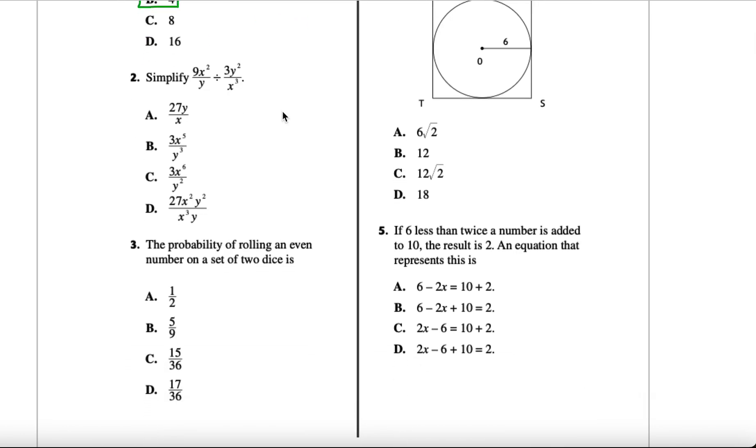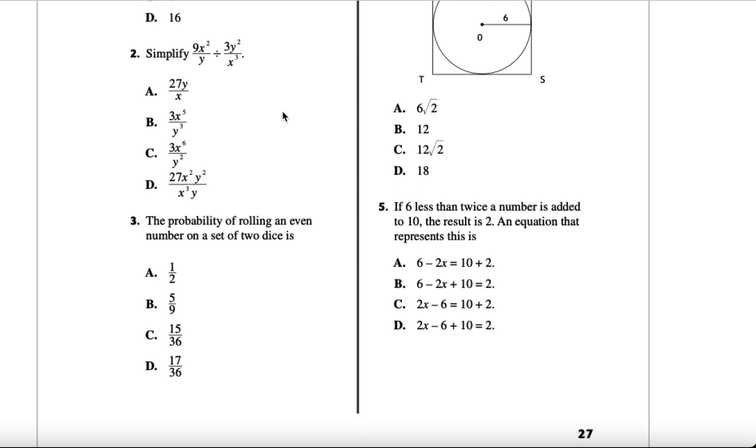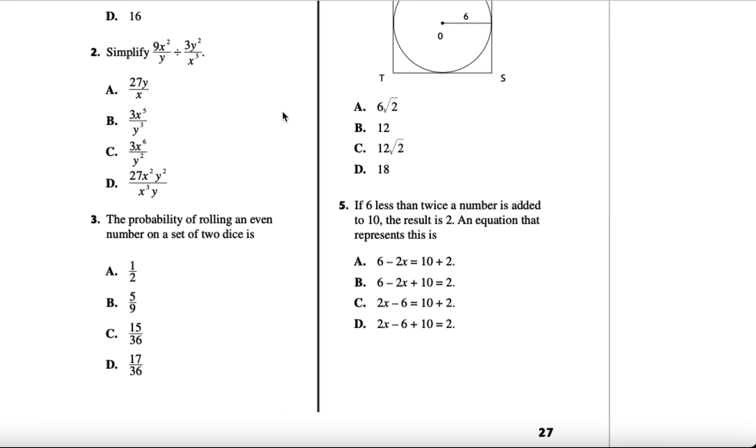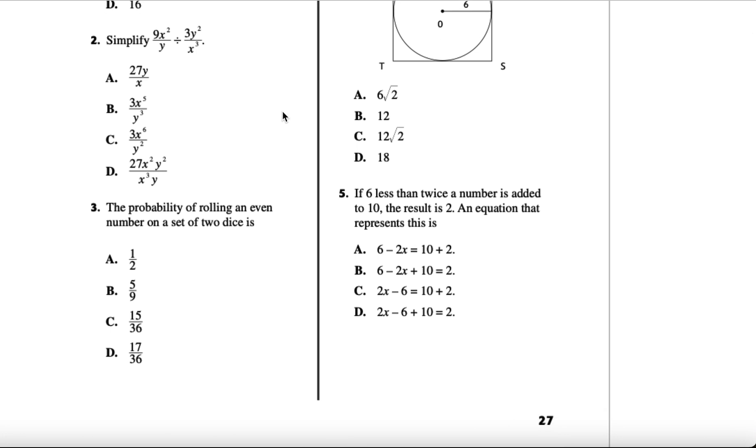The second one is simplify, and we have the expression there. Dividing a fraction by a fraction is not pleasant, so what we typically do is take the reciprocal of the second fraction and then do a multiplication. We can take the first one, 3x squared divided by y, and then we flip the second fraction.